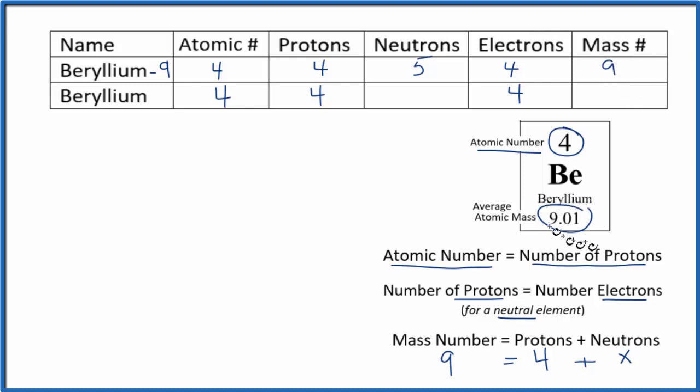So this nine, because this number is close to nine, that means the average that most of them will be nine. And that's what we see here. But some will be actually ten. So they'll have a mass number of ten. We can use that information to find the neutrons for this isotope of beryllium.